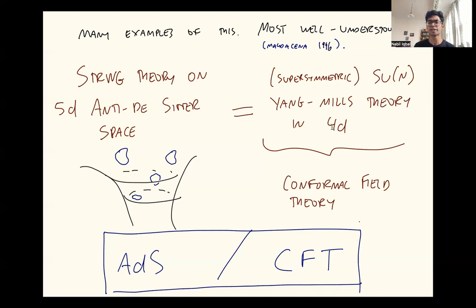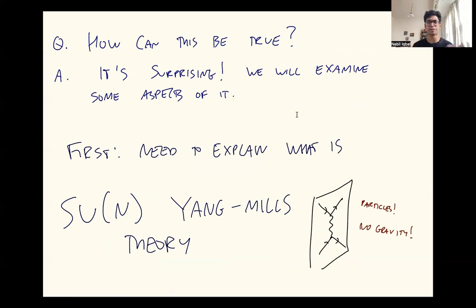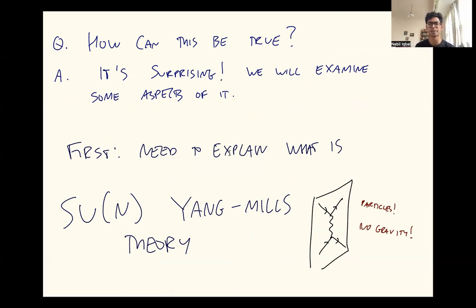Let me explain to you what these words mean and how this thing can possibly be true. It should be shocking to you that this can possibly be true. It sounds bizarre that you have a theory and it can be the same as a different system with one lower number of dimensions. So if you're surprised and maybe a little bit disbelieving, I think that's the correct response. It is a very surprising correspondence, but we are going to examine some aspects of it now. To explain this, I need to first explain what is SU(N) Yang-Mills theory.